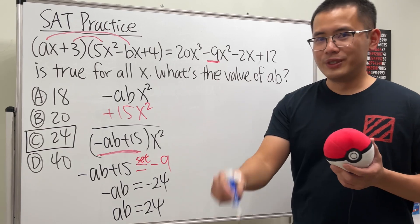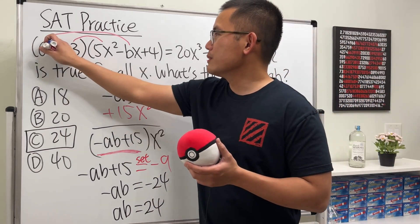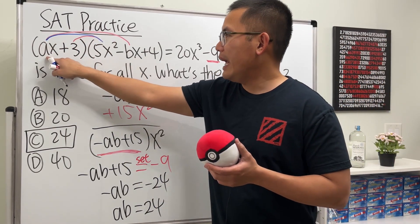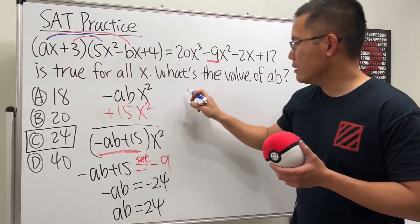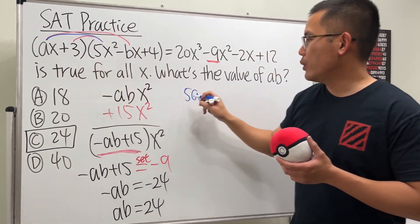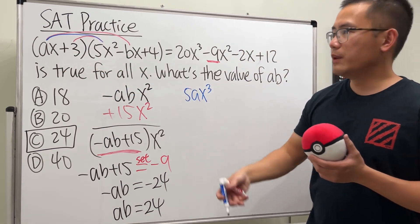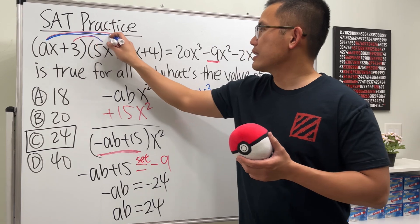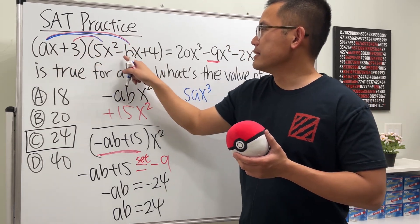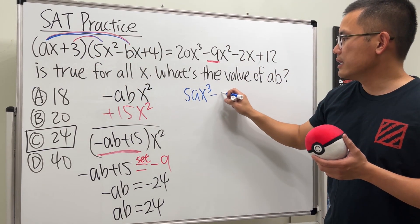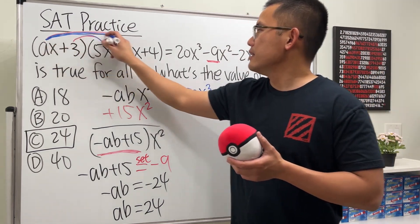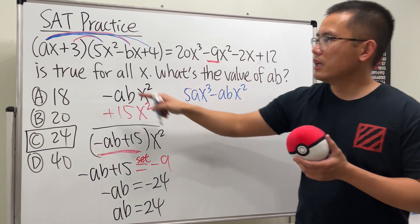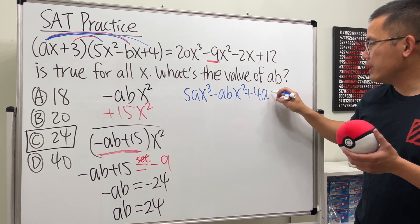Let's just multiply everything, and we'll do this in blue. So, if you just multiply it out the usual way, we take ax times 5x squared. We will get 5a, and then x times x squared, we get x to the third power. And then, we'll just continue. Take this times that, ax times negative bx, which is negative ab x squared.